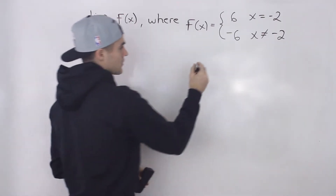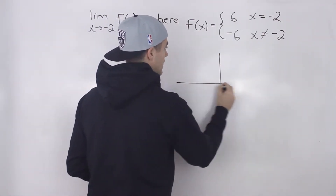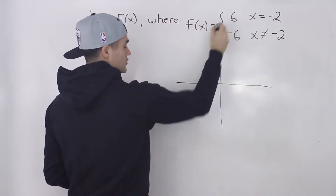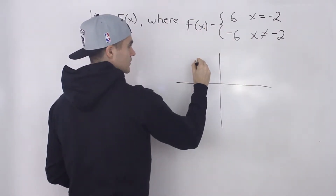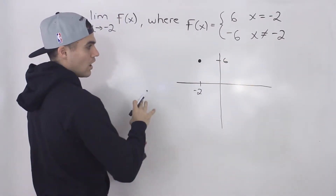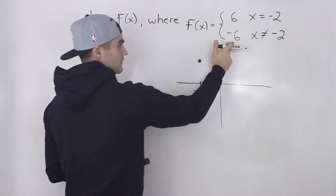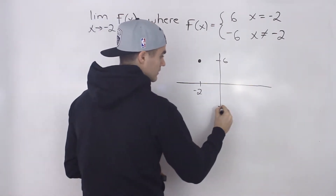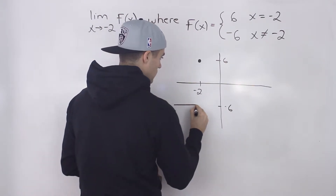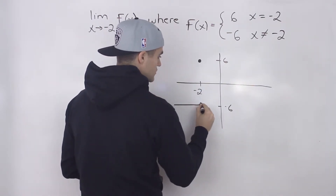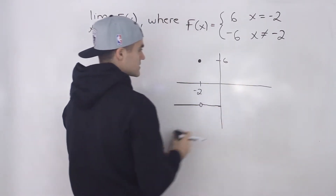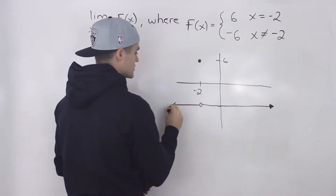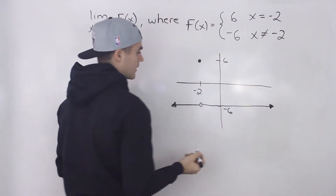To find this limit, let's first graph this function. At an x value of negative 2, this function has a y value of 6, which is up here. And then for all other x values, the function is going to have a y value of negative 6. Y equals negative 6 is just a horizontal line at negative 6. However, at this x value of negative 2, it's not going to be defined there because it's already defined at another y value. For all other x values, it's just this horizontal line at a y value of negative 6.